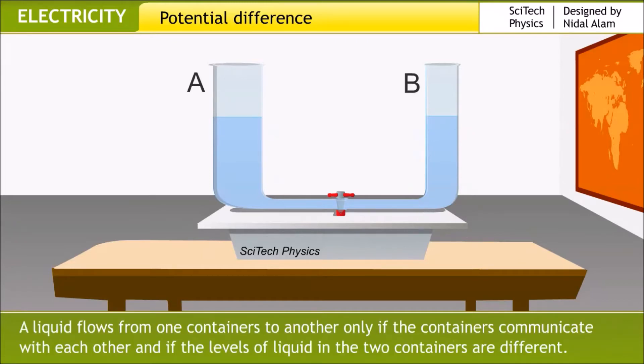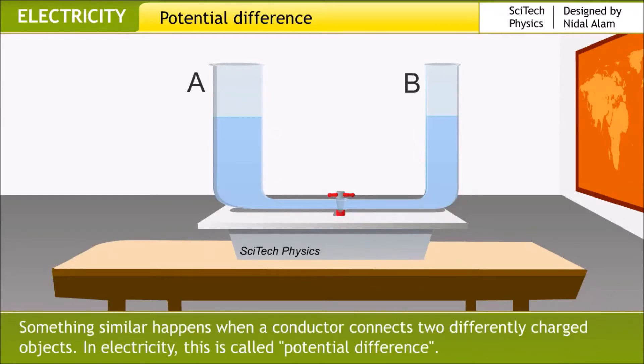A liquid flows from one container to another only if the containers communicate with each other and if the levels of liquid in the two containers are different. Something similar happens when a conductor connects two differently charged objects. In electricity, this is called potential difference.